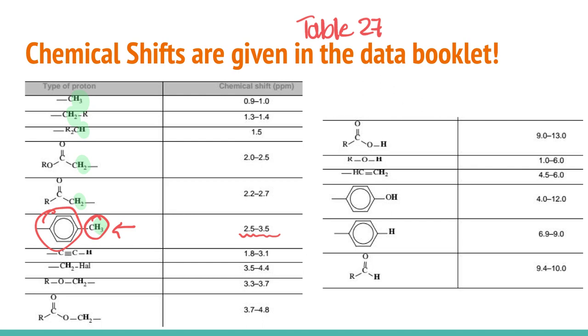Another example might be if you have protons attached to a carbon that's attached then to another oxygen group, that can be in the 3.3 to 3.7 range. If we go back to the example that we were looking at in our previous video, we had a proton that was attached to a carbon attached to an O, which was in this sort of range here.